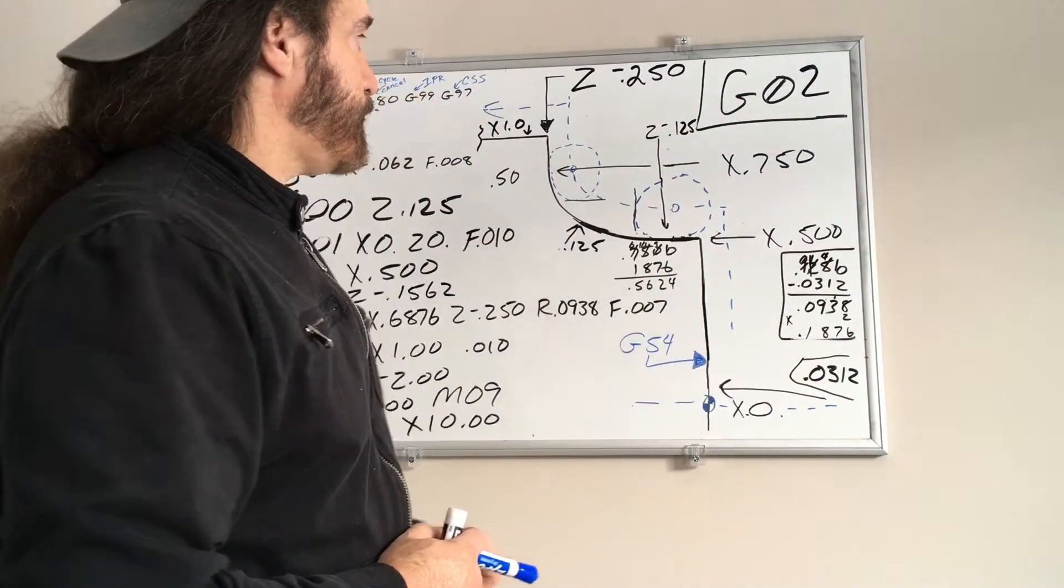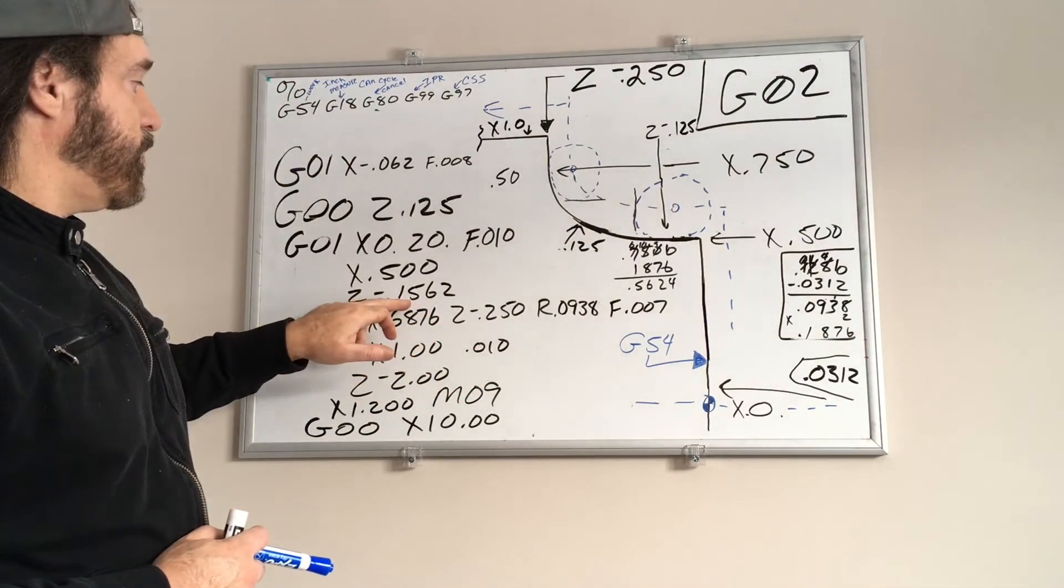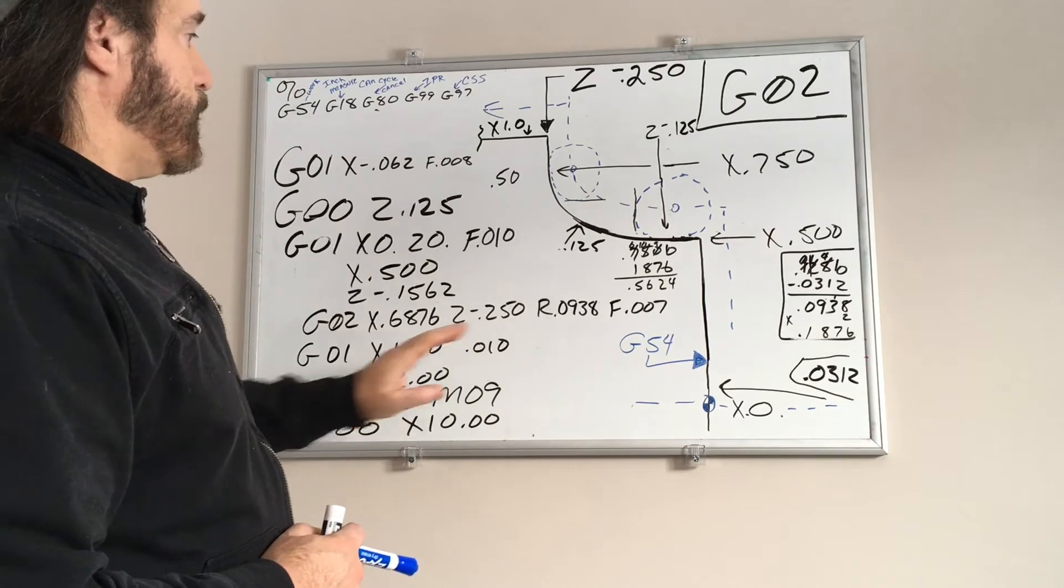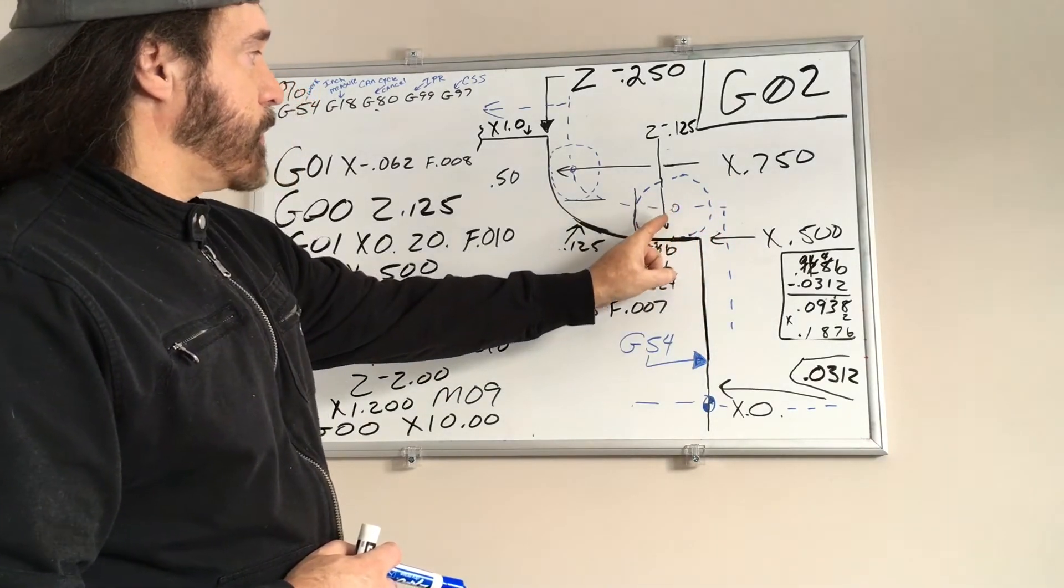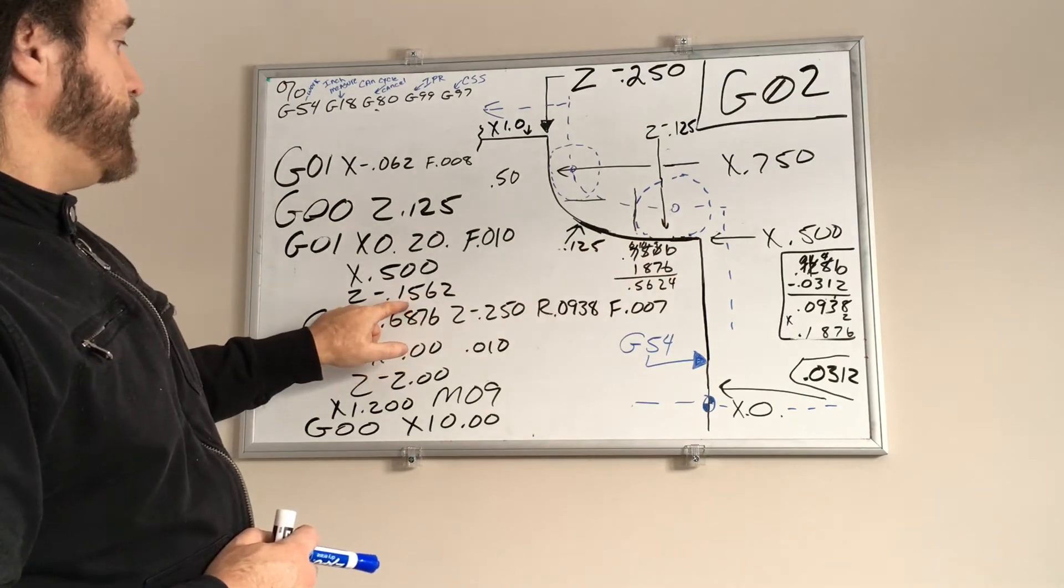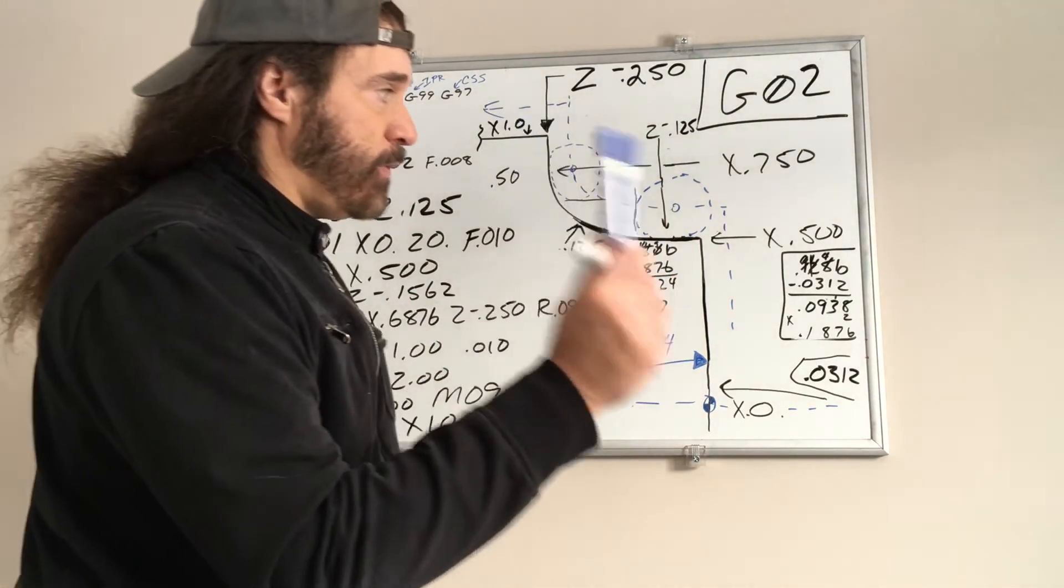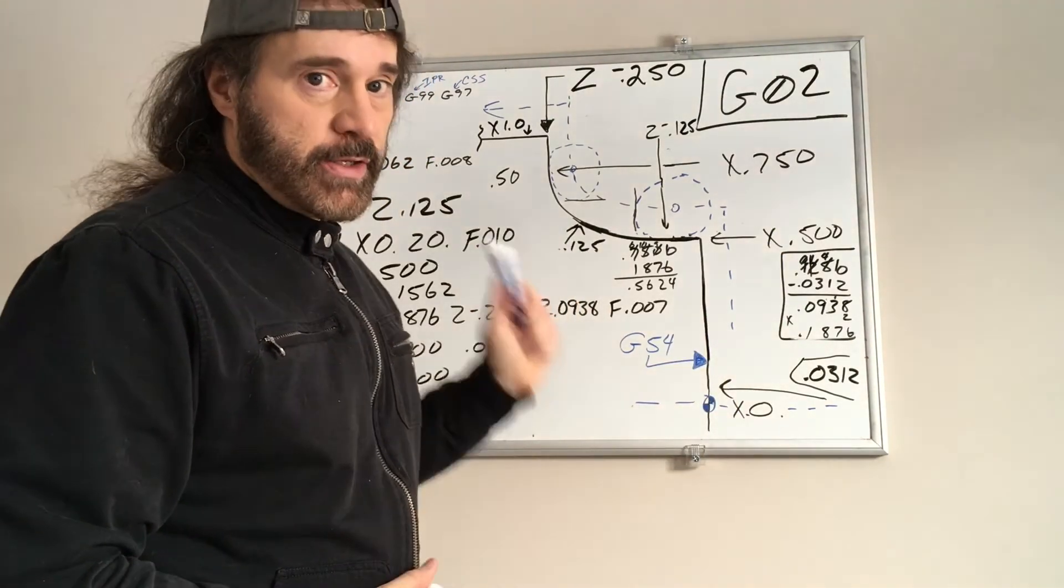Now with the radius of the cutter, you have to go past that by taking the radius and add it to that, so you get Z negative point one five six two. So you call it to X point five, you come in to this dimension. Now what we have to do here, we have to take our radius value.